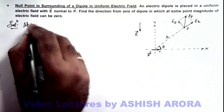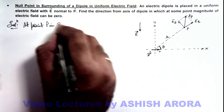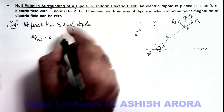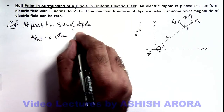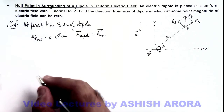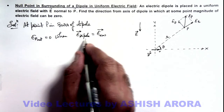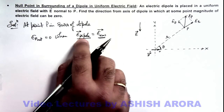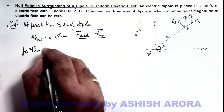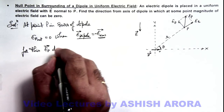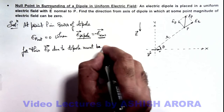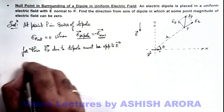We can write: at point P in the surrounding of the dipole, E-P net is equal to zero when the electric field due to the dipole equals the external electric field. Then E-dipole equals E-external, and it must also be opposite to the external field — only then will the net be zero. So E-P vector due to the dipole must be opposite to E vector.